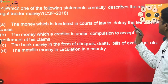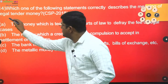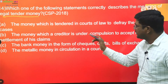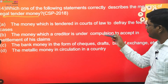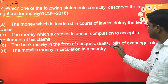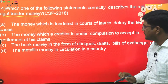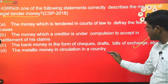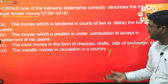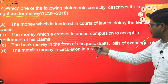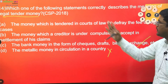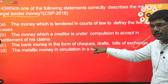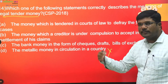Next: which statement correctly describes the meaning of legal tender money? The definition is also in NCERT Macroeconomics. Option A — money rendered in courts of law to defray fees — no. Option B — money which a creditor is under compulsion to accept in settlement of claims — that is the correct definition. Option C — bank money in the form of checks, drafts, and bills of exchange. Option D — metallic money in circulation — irrelevant. Legal tender money refers to checks, drafts, and bills of exchange because if a check bounces, you can be sued in court.